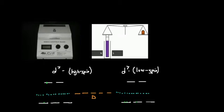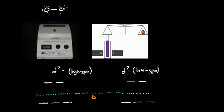One way we can look at those compounds is we can just look at structures. This is the technically correct structure of molecular oxygen. You've probably heard that oxygen is paramagnetic, and sure enough we see there are two unpaired electrons right there.